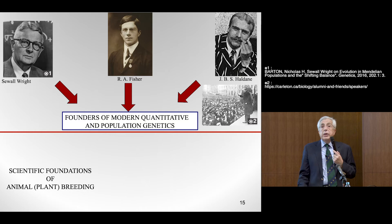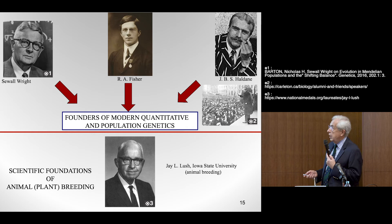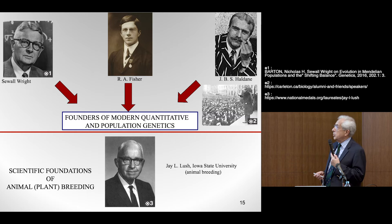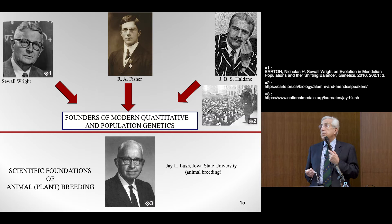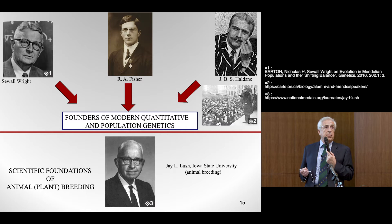We needed somebody in agriculture to put all this together in the context of animals or plants. The person who did that was Dr. J. Lawrence Lush. He is very famous because he developed perhaps the first textbook on scientific animal breeding, published in 1945 by Iowa State University Press, and he founded the famous Iowa School of Animal Breeding. Lush probably is the professor who has the largest number of PhD students trained under him — I think he trained close to 140 or 145 students.